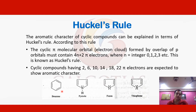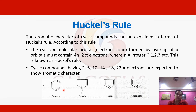We can also define Hückel's rule in another way: all aromatic compounds must contain an odd number of electron pairs. In benzene we have three pi bonds — one pi bond equals two electrons — meaning it has six pi electrons, which equals three electron pairs, an odd number. The pi electron count should be 2, 6, 10, 14, 18, 22, and when considering electron pairs, that number must be odd.